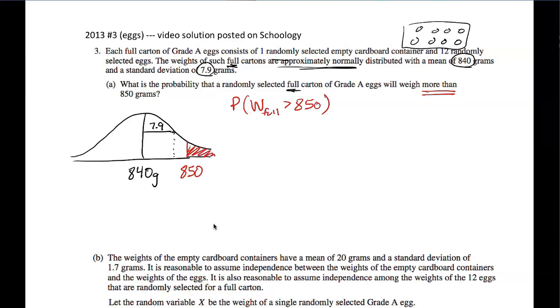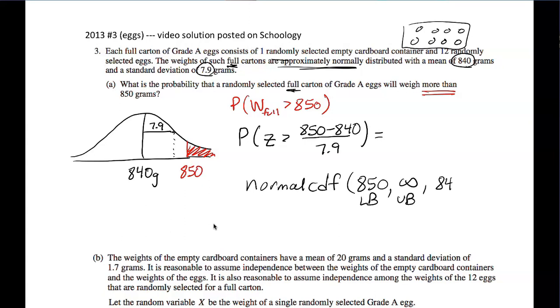Now, I like to remind you about Z-scores. This would be the probability that the Z-score is greater than the boundary 850 minus the mean 840, divided by the standard deviation of 7.9. From there, we can calculate the probability by using table A or using the normal CDF command. Our lower bound would be 850. Our upper bound is some large number. Our mean is 840. And our standard deviation is 7.9.